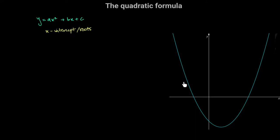In other words, I want to know the values of x at which this curve intersects the x-axis, in terms of a, b, and c. At the x-intercepts, y is equal to 0, which means that we have ax squared plus bx plus c is equal to 0, and I want to solve this equation and get an answer for x.